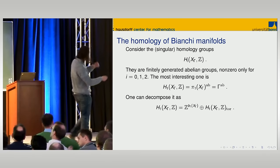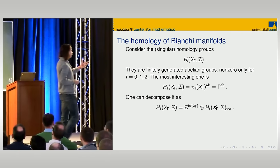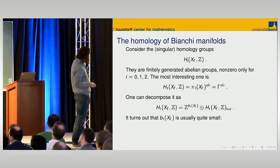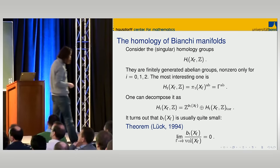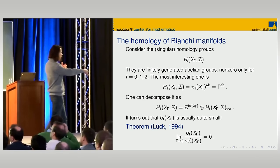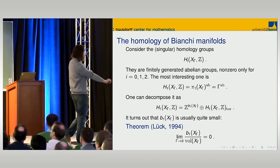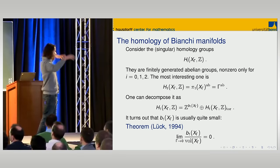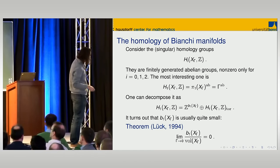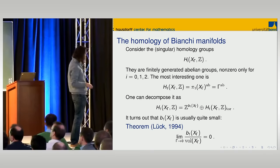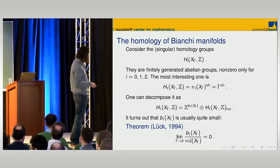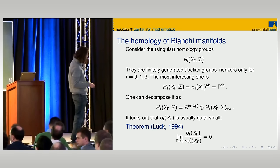As any finitely generated abelian group, you decompose it into a torsion-free part and a torsion part. The rank of the torsion-free part is called the first Betti number. A theorem of Lück says that as the congruence subgroup becomes smaller, giving a sequence of covers converging to hyperbolic 3-space, the first Betti number grows slower than the volume: the limit of the first Betti number over the volume is zero.